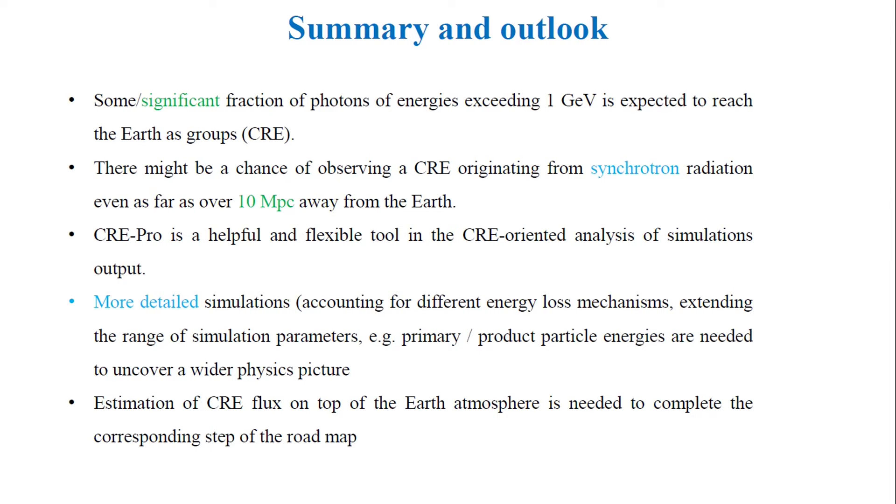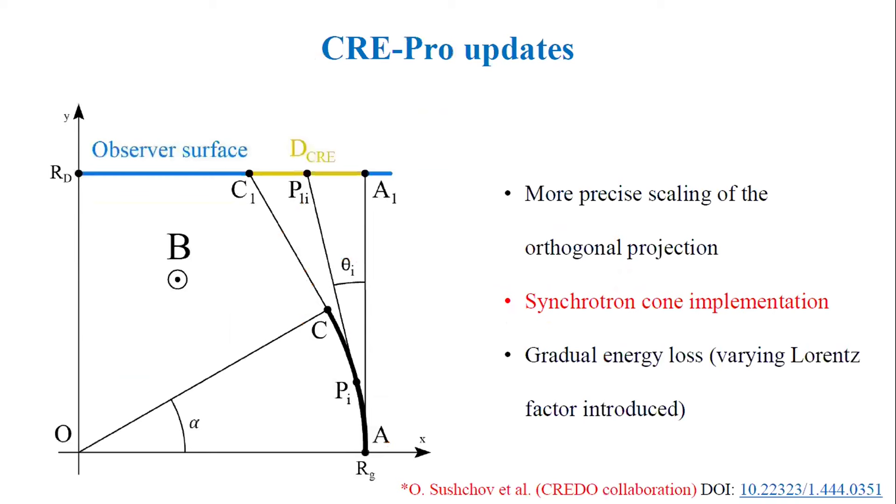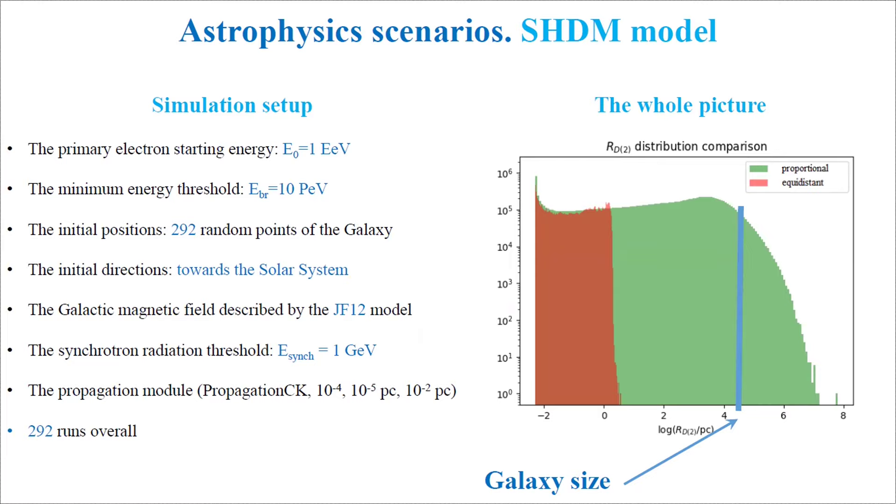I believe I don't have here the energy distribution of these photons, but this distribution will not be correct in any case because of some technical process. I introduced this parameter limiting the energies of synchrotron photons just to make the code run. You should expect a peak in this energy distribution, but this peak is not physical, it's introduced with the code.